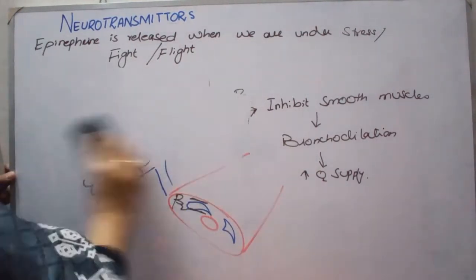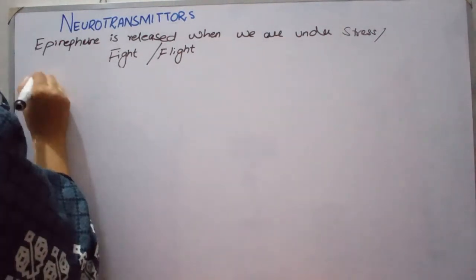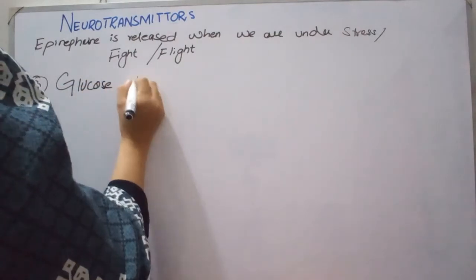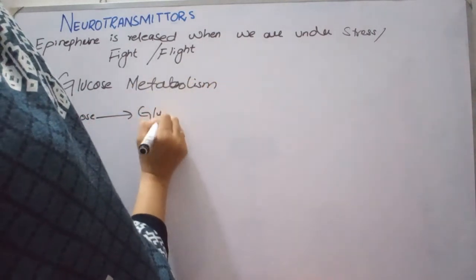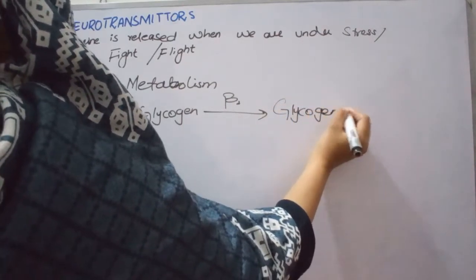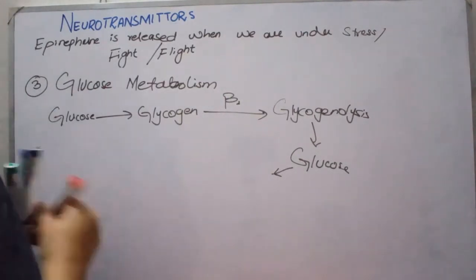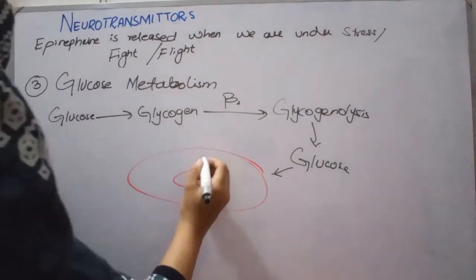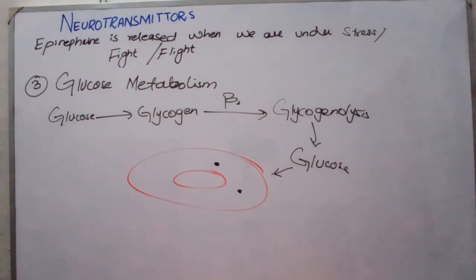In the fight-or-flight condition, we also need more glucose. Glucose is stored as glycogen. Through beta-2 receptor activation, epinephrine triggers glycogenolysis — converting glycogen back into glucose — and this glucose is released into the blood to provide energy.